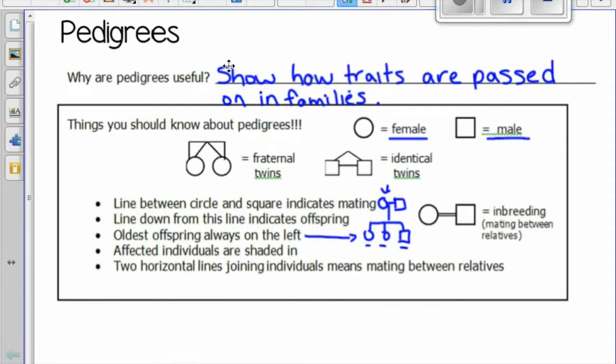The oldest offspring is always on the left. Affected individuals are shaded in. Two horizontal lines joining individuals means mating between relatives.